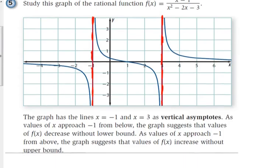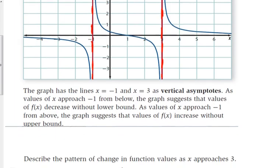Looking at the picture, X equals negative 1 and X equals 3 are vertical asymptotes. As values of X approach negative 1 from below, so from the left side of negative 1, Y values are decreasing without lower bound, which is a way of saying that these Y values are going to continue down forever, approaching negative infinity. When the values approach from above, so from the right side of negative 1, Y values are increasing without upper bound. So those Y values are headed towards positive infinity. Similarly, I want you to describe the pattern of change as X approaches 3.